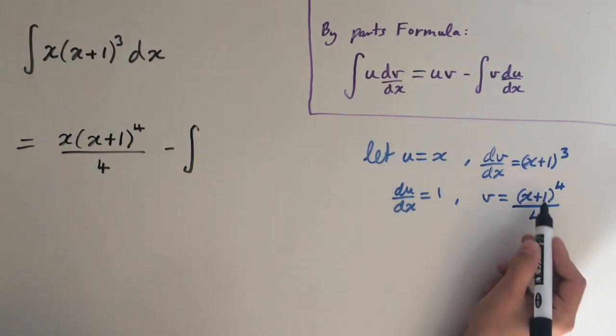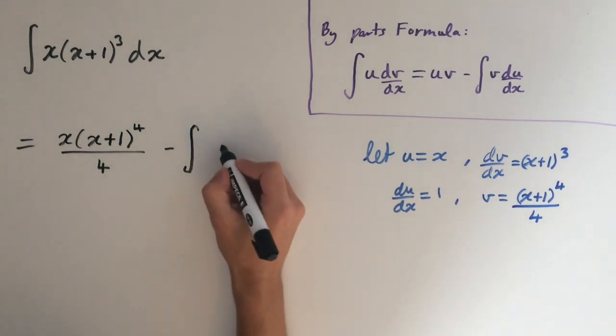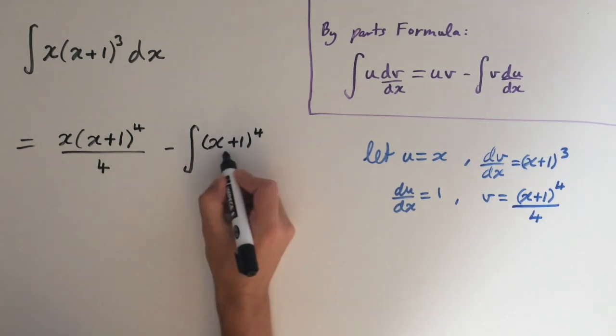And then minus integral of v here times du dx. So it's just going to be v because this is 1. So integral of x plus 1 to the power of 4, all over 4.